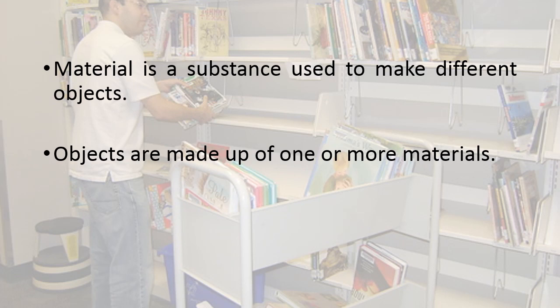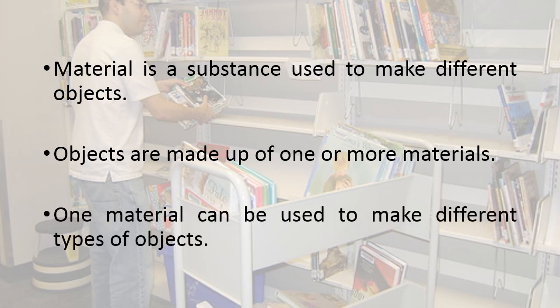For example, a pencil is made up of wood as well as graphite. One material can also be used to make different types of objects — for example, glass can be used to make a mirror, and glass can also be used to make various types of vessels.